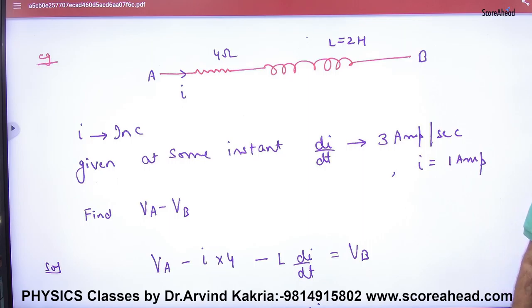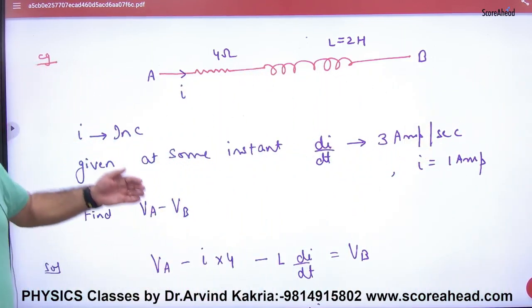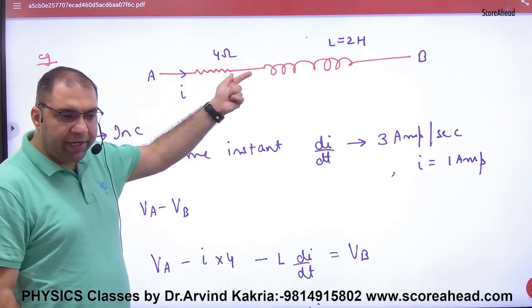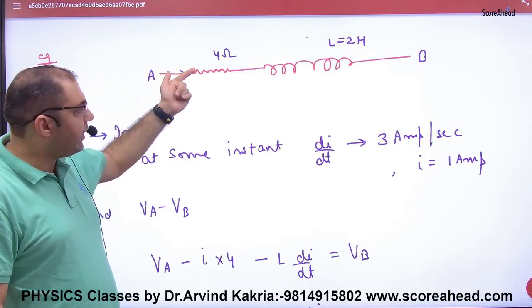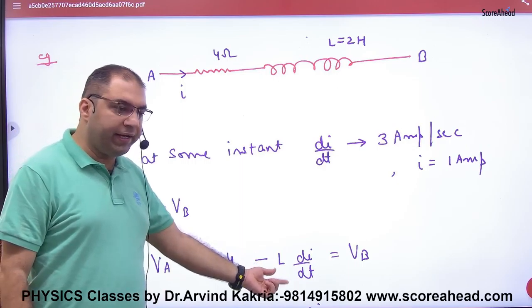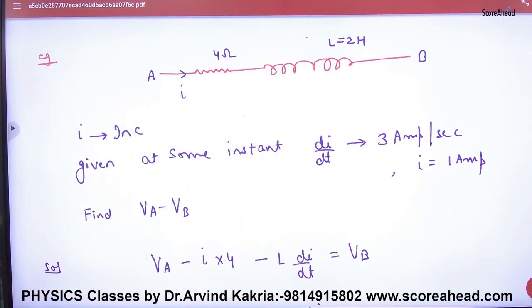So how did we start? Here in the direction of current, Va minus I into 4, and inductor induced emf minus L di by dt is equal to VB. What point is clear?